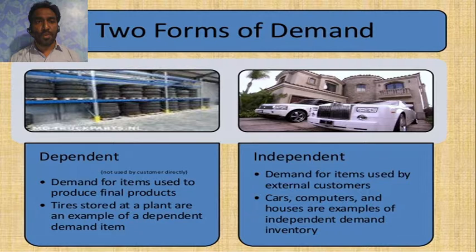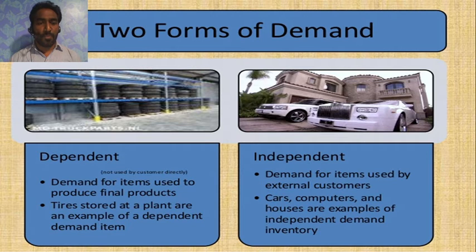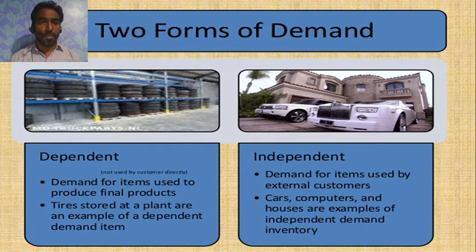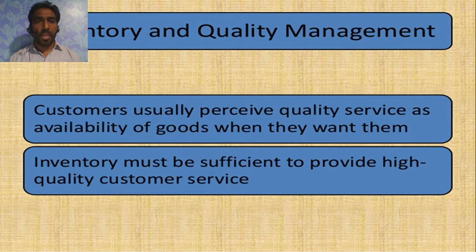Work-in-progress inventories have two forms of demand: dependent and independent. Dependent demand is the demand for any item used to produce a final product — tires stored in a plant are an example of dependent demand because tire sales are totally dependent on the automobile sector. Independent demand is demand for items used by external customers — cars, computers, and houses are examples of independent demand inventory.